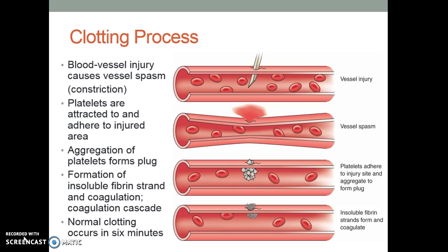Generally with the clotting process, you start with some sort of injury which causes a vessel spasm, also known as constriction. Platelets become attracted to and adhere to the injured area. As these platelets all stick together, they form a plug. So the platelets kind of start the whole process, but the true stable clot is actually a combination of fibrin strands, coagulation factors, and all those things. Usually normal clotting occurs in about six minutes.